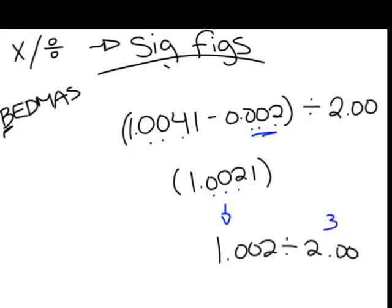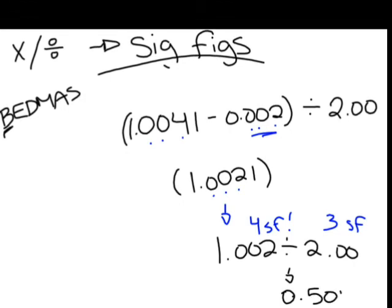Then, you'll move on to your rules of multiplication and division, where you'll notice that the second number only has three sig figs, while your first number has four. Therefore, your final answer will be 0.501, which has three sig figs.